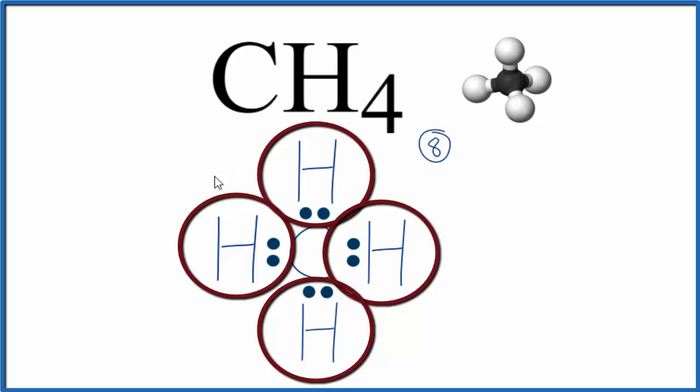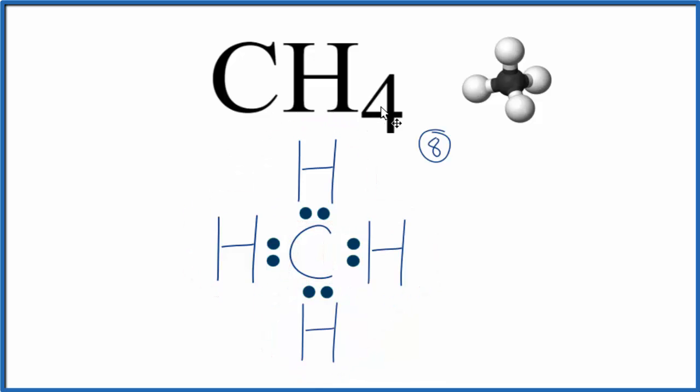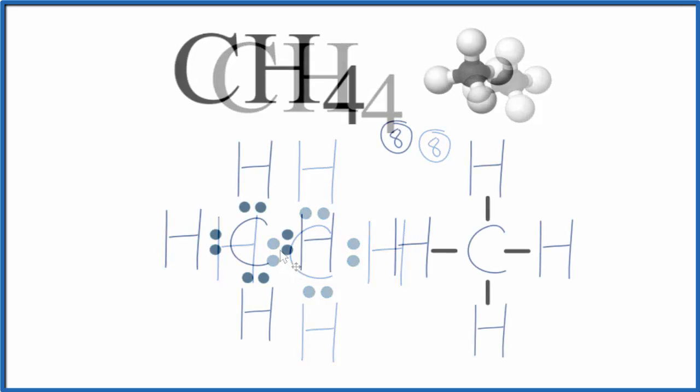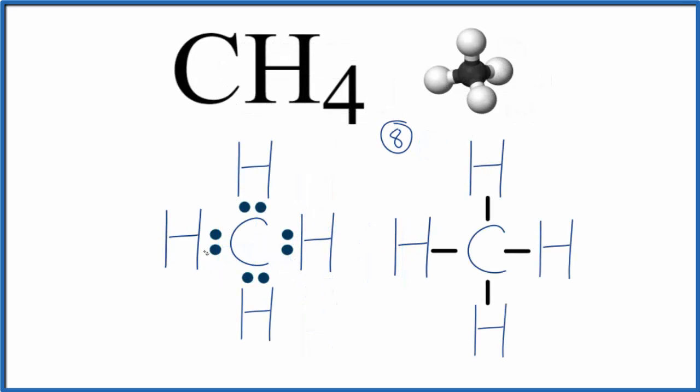So this is the Lewis structure for CH4, methane. You might also see these bonds replaced with lines, where each pair of electrons is represented by a single bond.